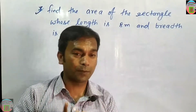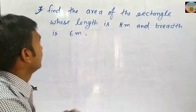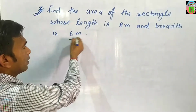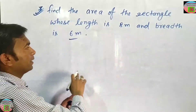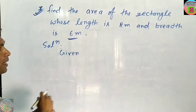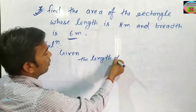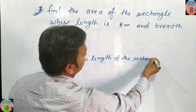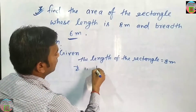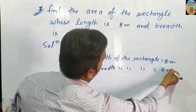Hi everyone, dear students. Today we are going to learn how to find the area of the rectangle if length and breadth is given. See this question: find the area of the rectangle whose length is 8 meter and breadth is 6 meter. Write here 'Solution' and 'Given'. What is given? Length and breadth is given. The length of the rectangle is equal to 8 meter and breadth of the rectangle is equal to 6 meter.